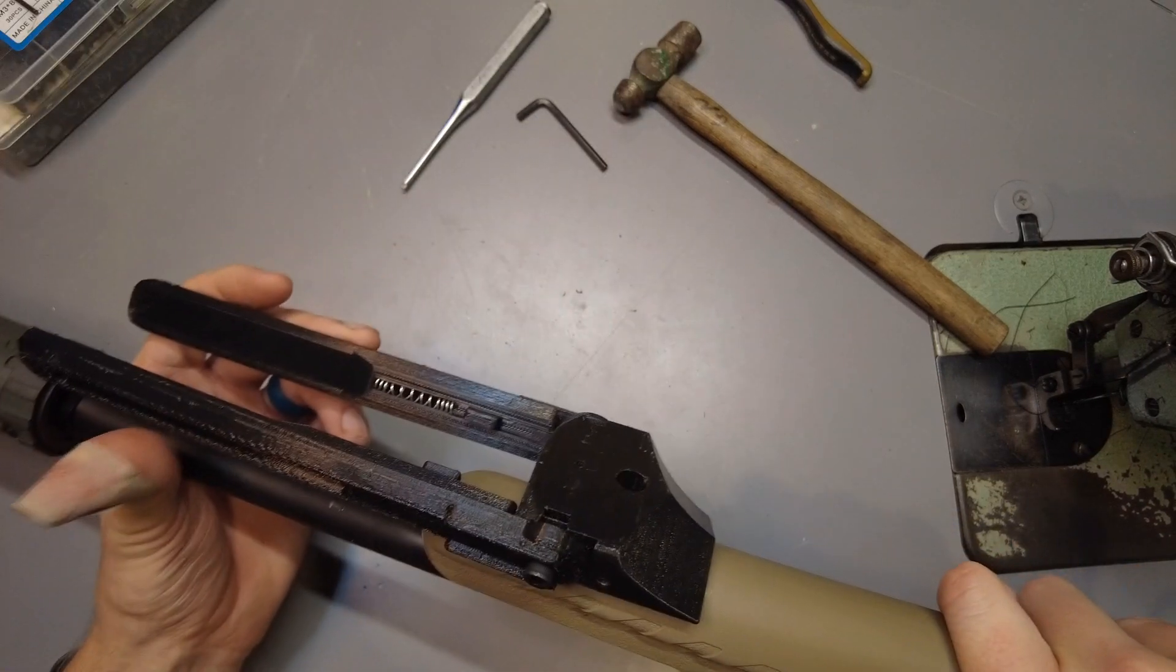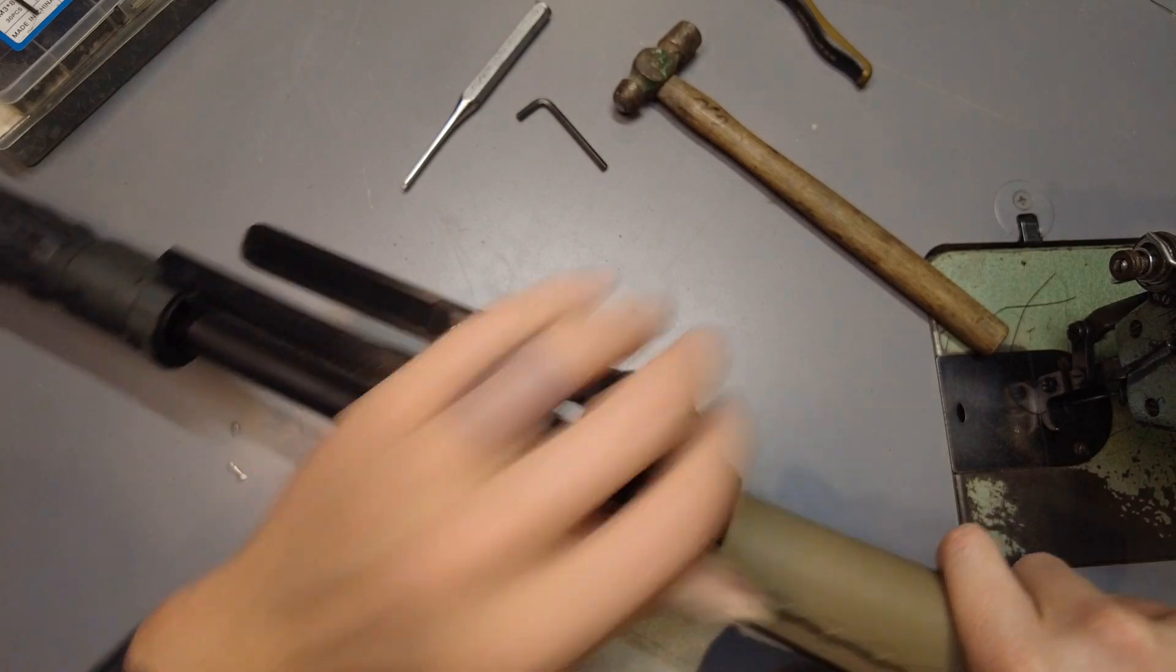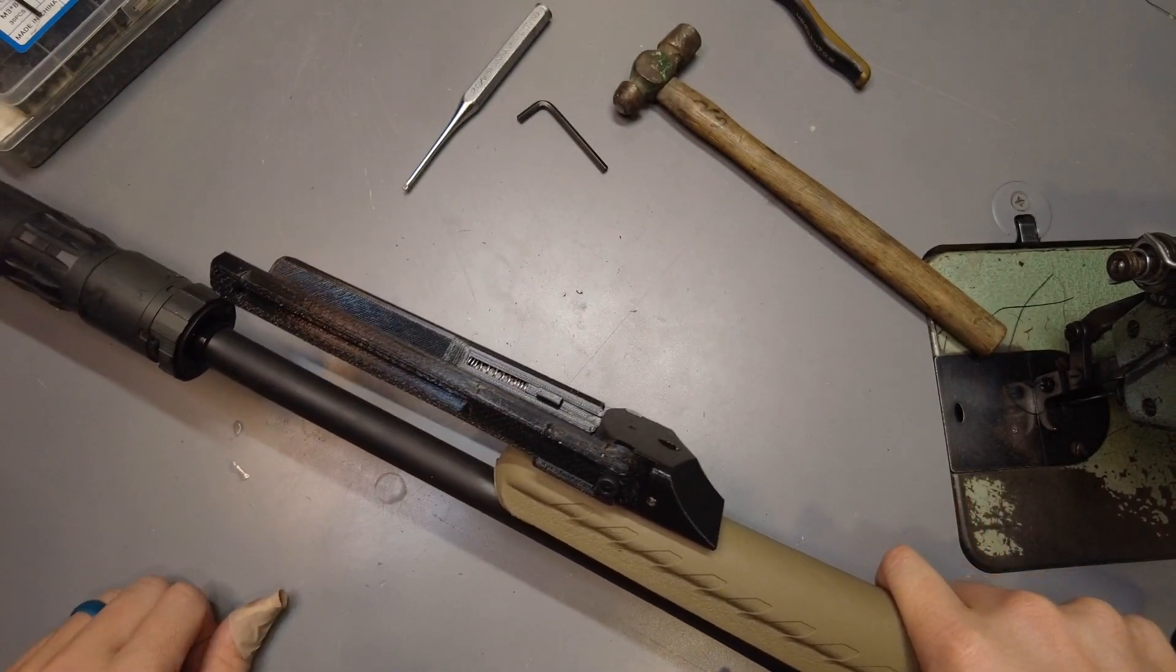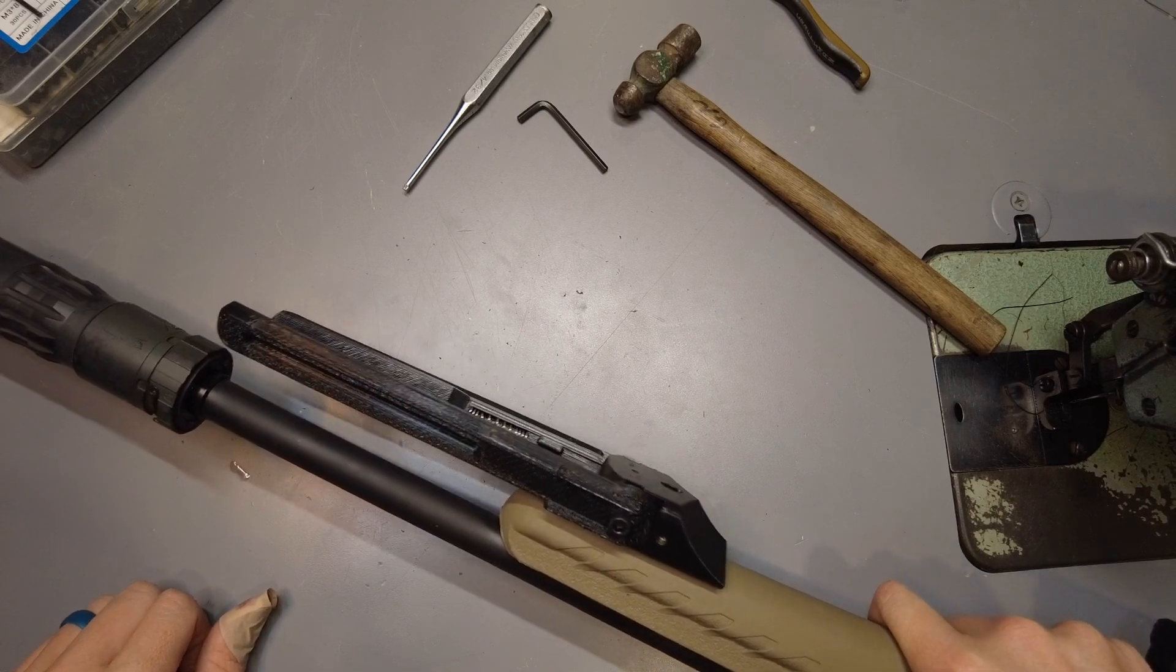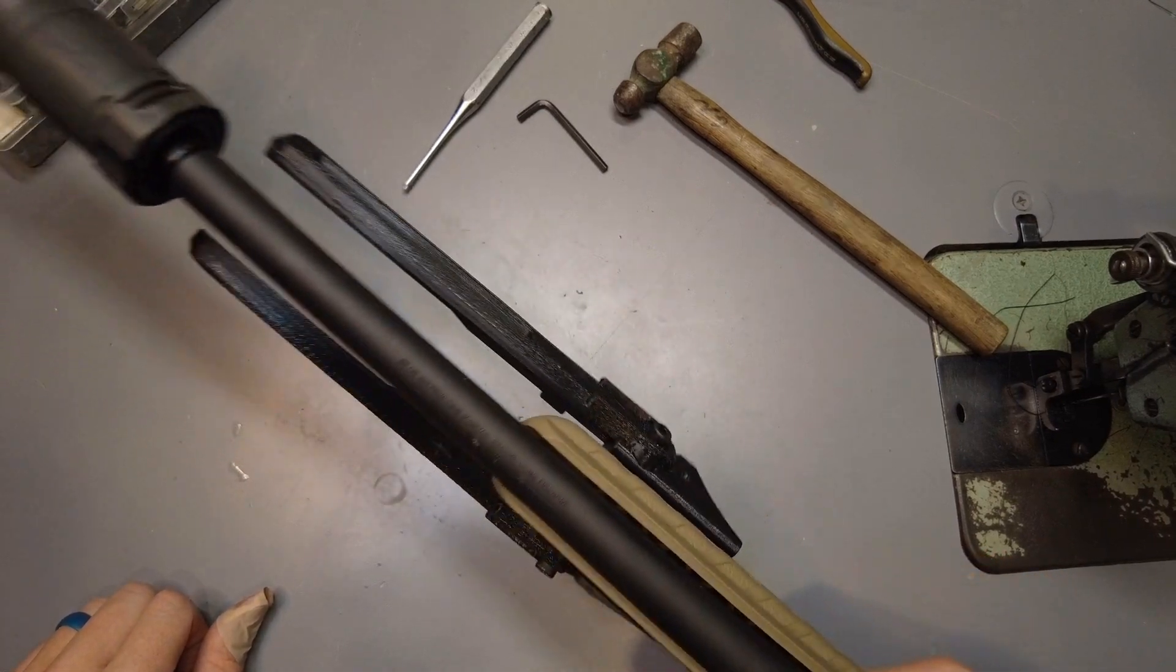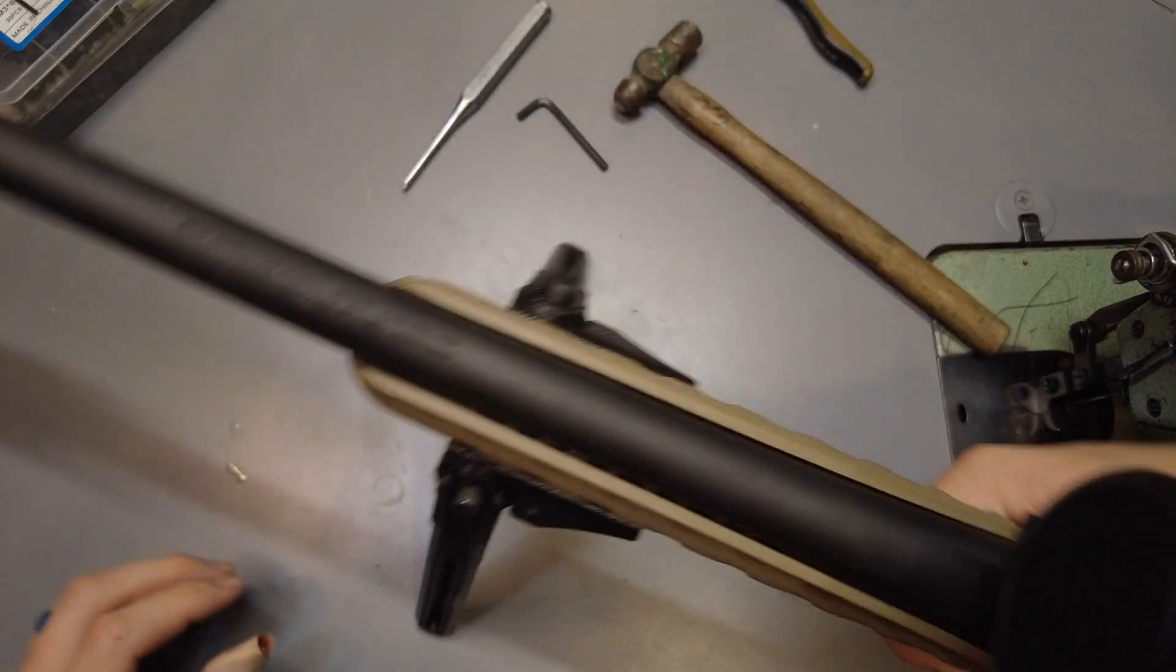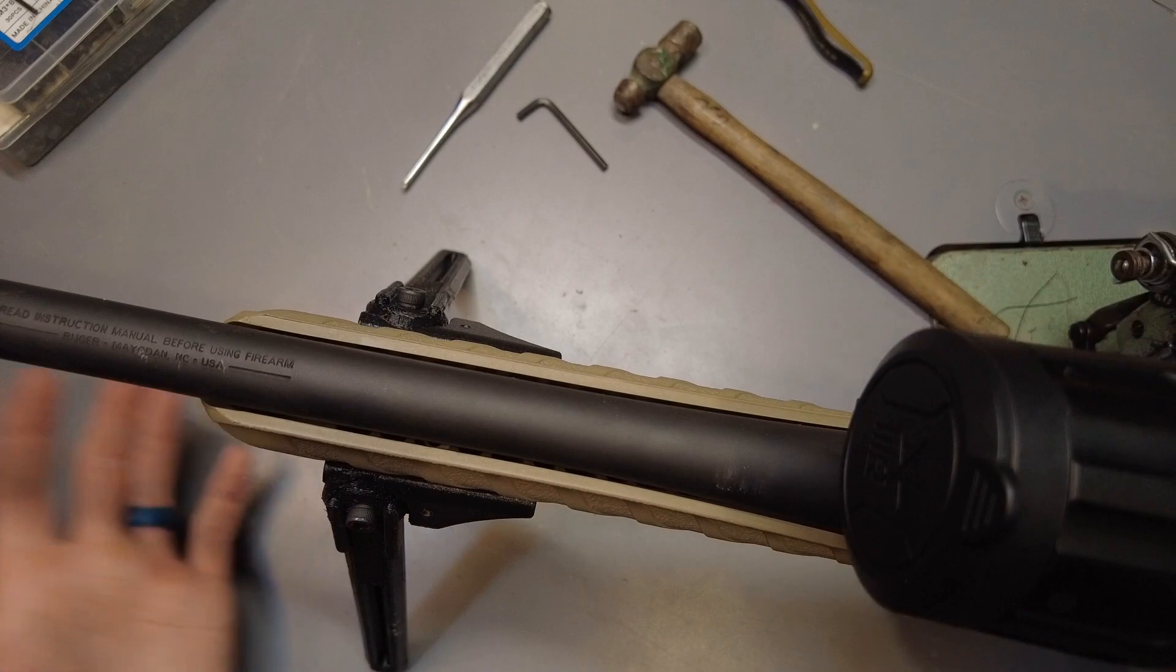But either way, this thing is pretty solid. It sits on there pretty well. Obviously it's still just PLA+, so it's not going to be as durable as a metal one, but it's pretty light. I've made the height of these legs to where it sits just about the right height for me whenever I'm shooting prone.